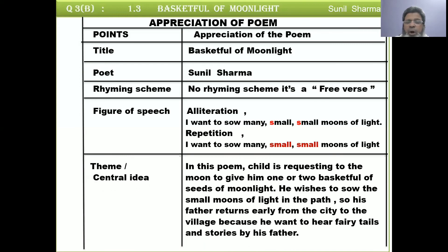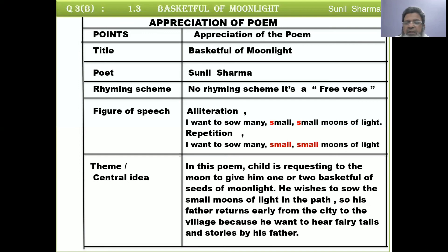The next point is the theme and the central idea. In this poem, the child is requesting the moon to give him one or two baskets full of seeds of moonlight. He wishes to sow small moons of light along the path so his father can return early from the city to the village, because the child wants to hear fairy tales and stories from his father. This is the theme of the poem, worth 2 marks.